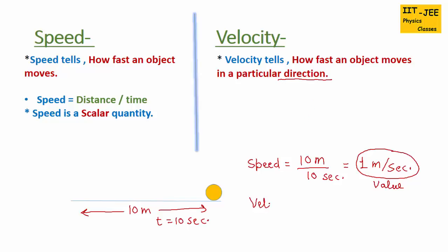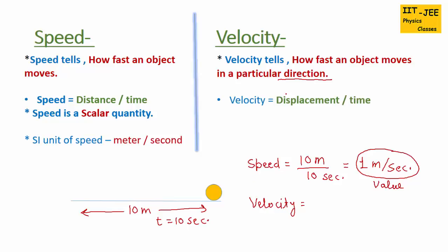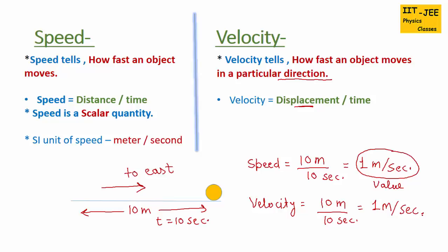The formula of velocity is displacement over time. Here, the object displaces 10 meters in 10 seconds, so velocity is again 1 meter per second. But velocity also includes the direction of motion — and since the ball is travelling to the east, the velocity would be 1 meter per second to the east.